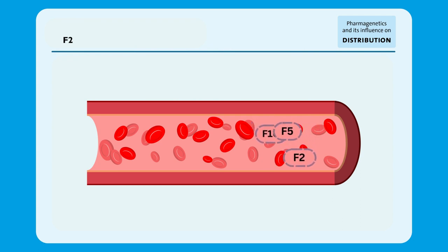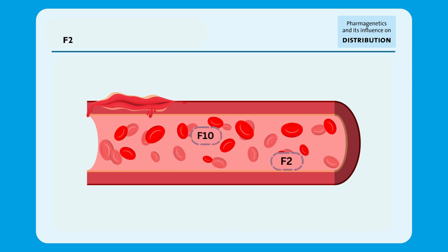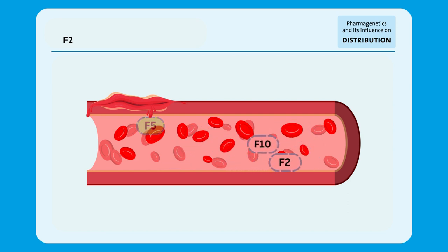Factor 2 is a protein and part of the coagulation cascade, the process that creates and dissolves blood clots. The protein circulates in the bloodstream in an inactive form until the coagulation system is activated by an injury that damages the blood vessels. In response to an injury, factor V is activated. After activation, this factor V interacts with factor X, activating it.